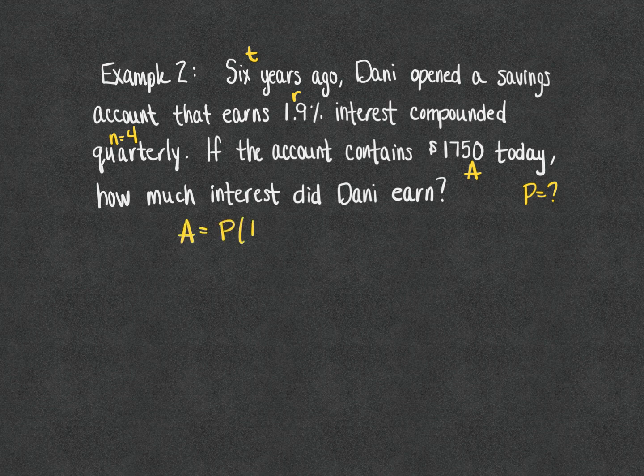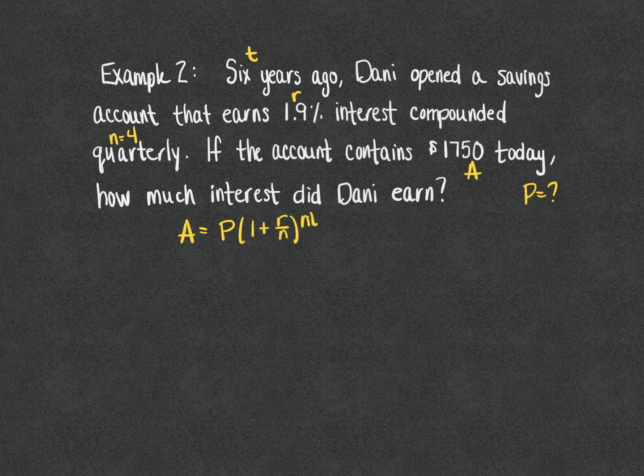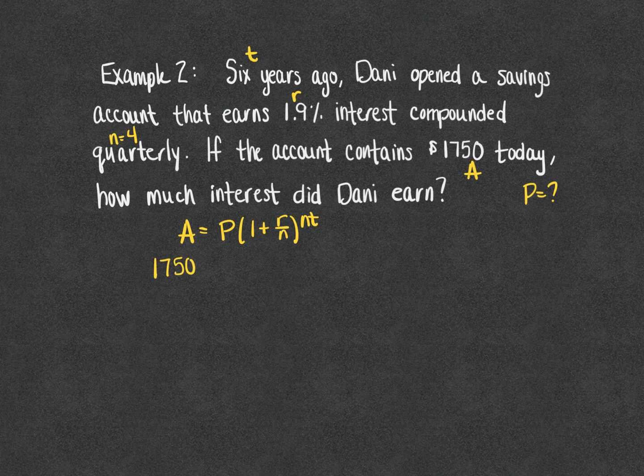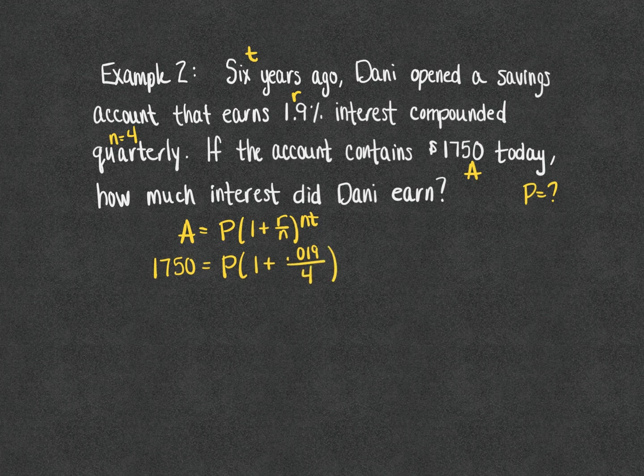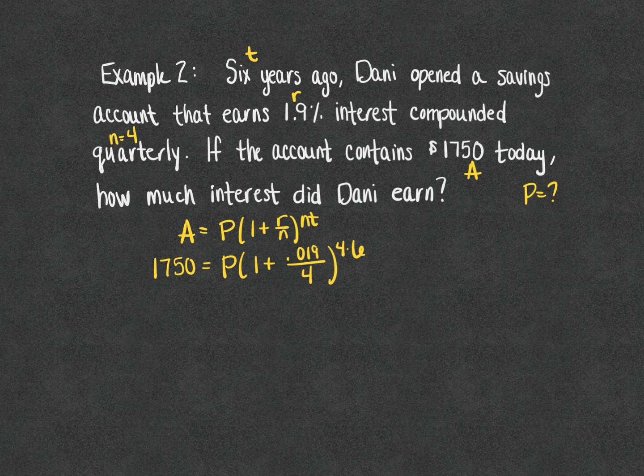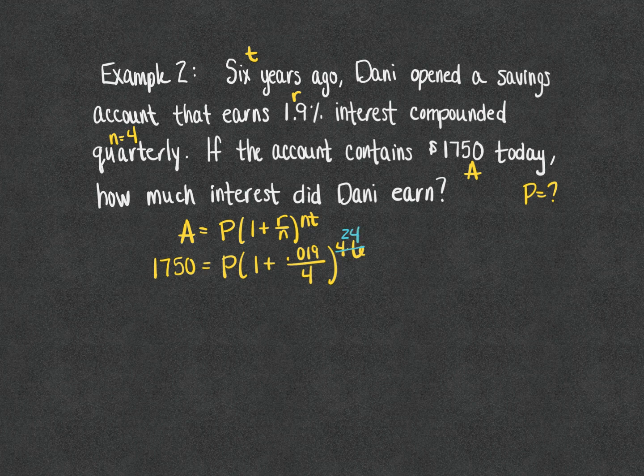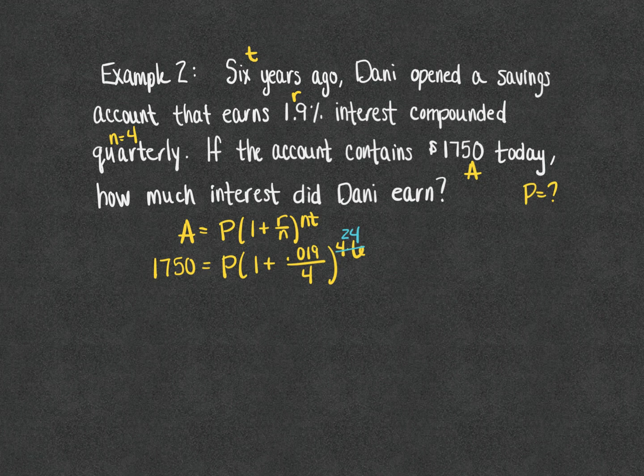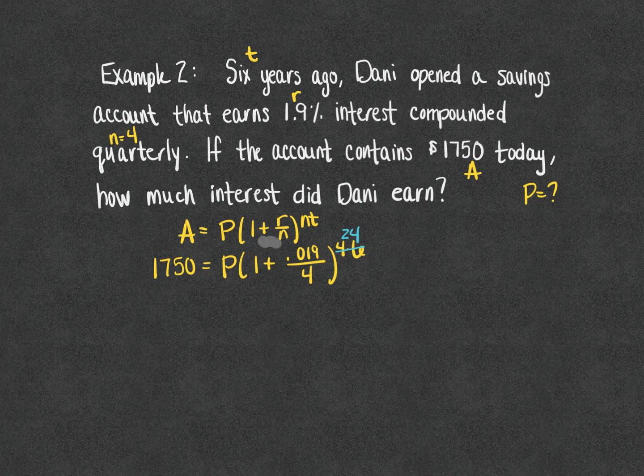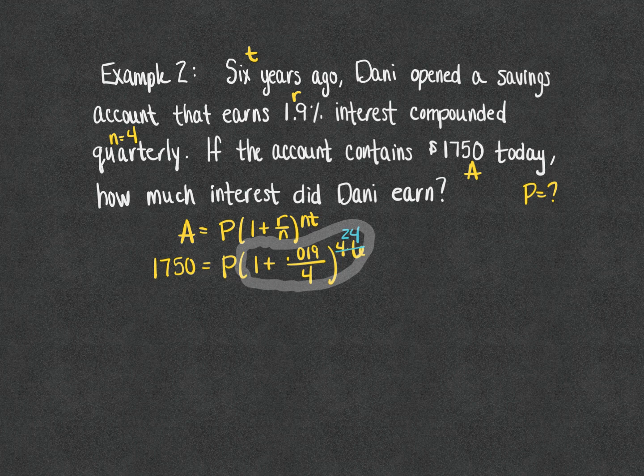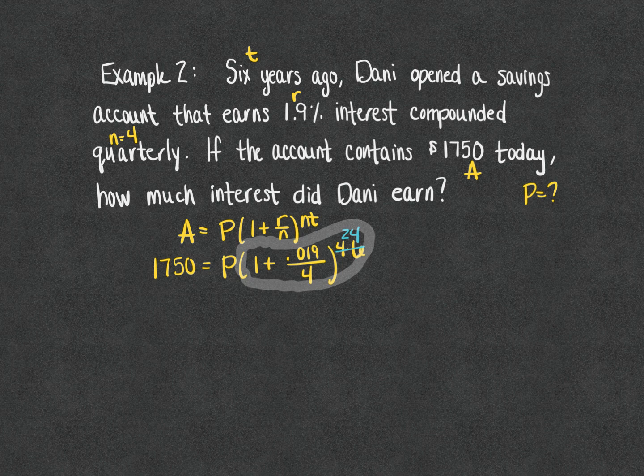Going to our compound interest formula and filling in the values that we do know: Our total amount in the account is $1,750, interest rate 1.9% compounded quarterly and six years ago. Four times six is 24, so I'm going to write that as a 24. On my calculator what I'm going to calculate is this portion right here, just that part. Using parentheses, 1 plus 0.019 either divided by or using your fraction bar 4 raised to the 24th power.